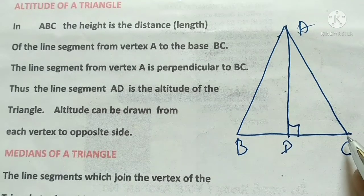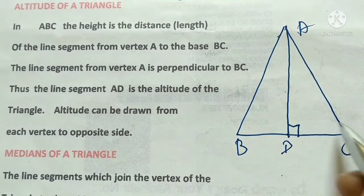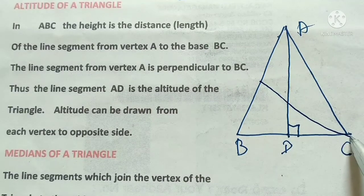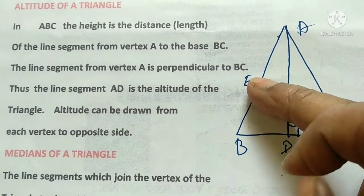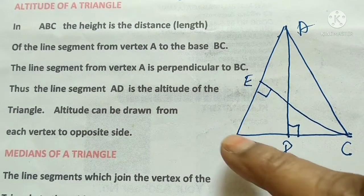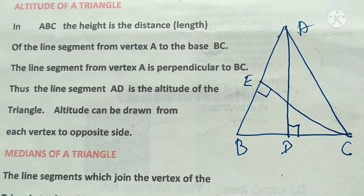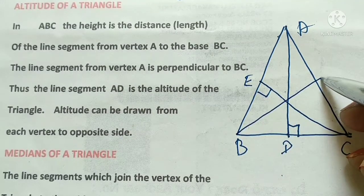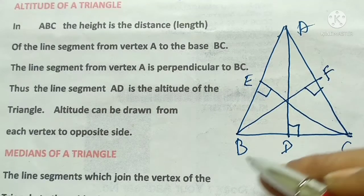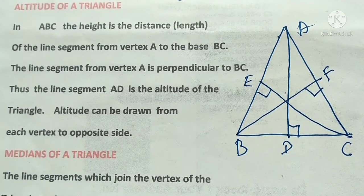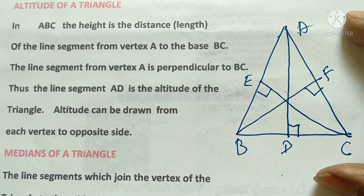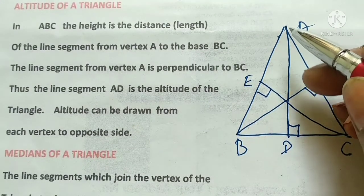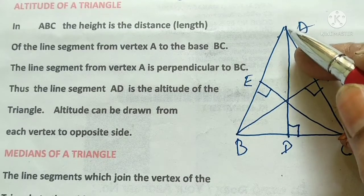Similarly, vertex C is opposite side AB — CE is perpendicular to AB. Vertex B is opposite side AC — BF is perpendicular to AC. Let us say the foot is F, so BF is perpendicular to AC. We have three altitudes: AD, BF, and CE. Altitudes are perpendiculars drawn from the vertex to the opposite side of the triangle.